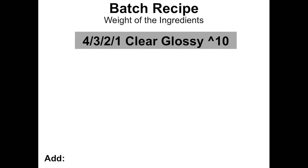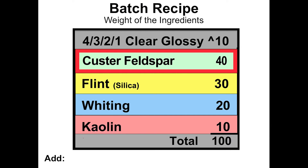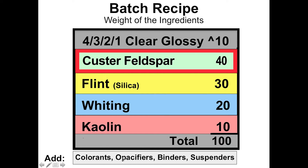Let's take a look at a recipe. The weight of the ingredients are listed in the recipe. This is 4321, a clear glossy cone 10 glaze designed by Bernard Leach. It's called 4321 because it's 40%, 30%, 20%, and 10% — they always add up to a hundred. All the main ingredients in the base glaze add up to a hundred. Then separately we add the colorants, opacifiers, binders, and suspenders, which are not included in the basic 100% of the recipe.